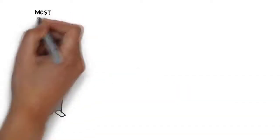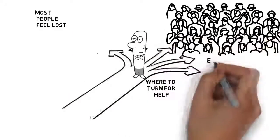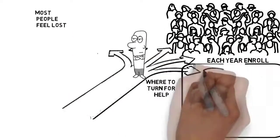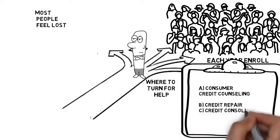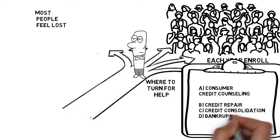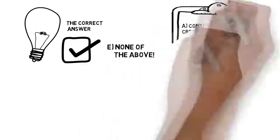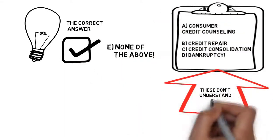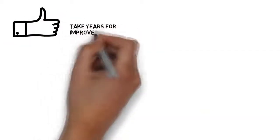At this point, most people feel lost, unsure of where to turn for help. So, millions each year enroll for consumer credit counseling, credit repair, credit consolidation, or as a last resort, bankruptcy. Well, the correct answer is E. None of the above. These systems don't understand the FICO world. They cost lots of money and take years for incremental improvement.